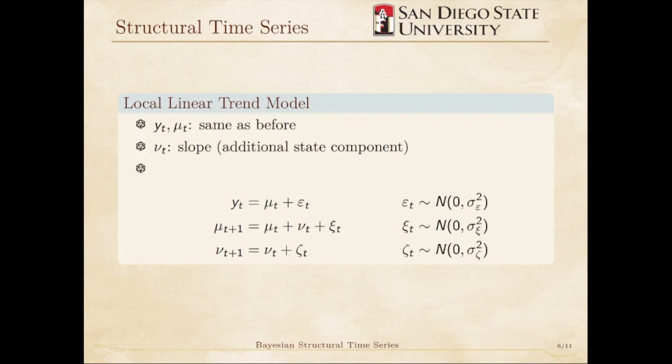Note here that Mu depends on the previous value of the slope along with the previous value of Mu. And since we have an additional state component, NuT, we have an additional noise term, ZetaT. Again, the parameters here are the variances of the three error terms. The local linear trend model might look something like this.